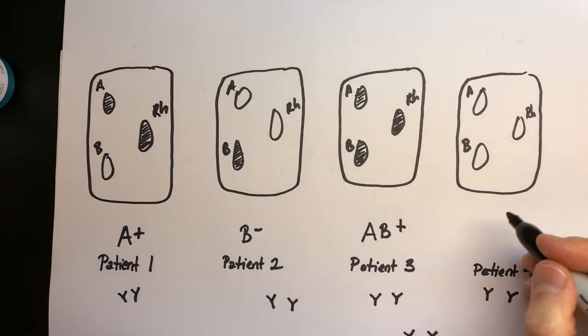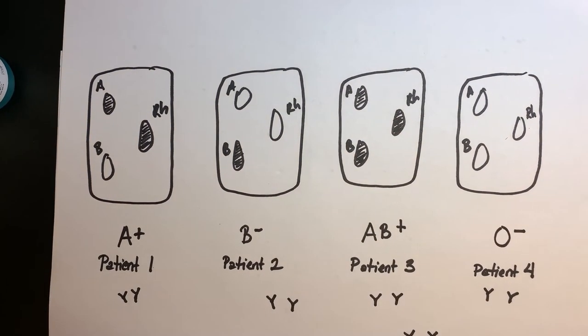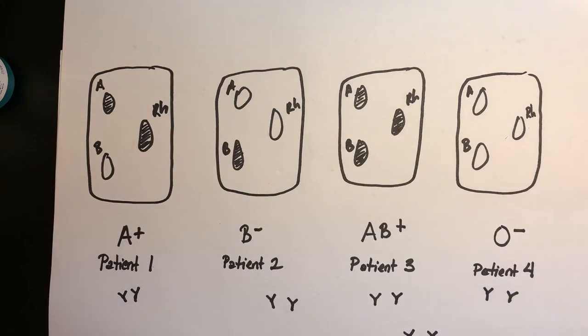How about patient number four? Patient number four was O negative. O negative. You might know something important about A, B positive and O negative. You should. All right, so what would I shade in for O negative?